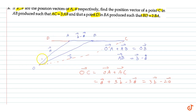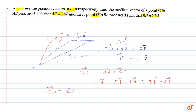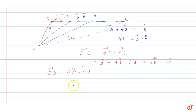Point D is such that BD = 2BA. OD vector equals OB plus BD. So OD vector equals B vector plus 2 times (A minus B) vector, which gives us 2A vector minus B vector.